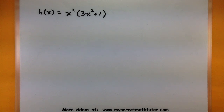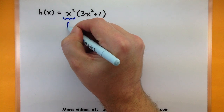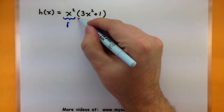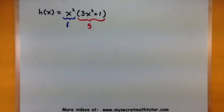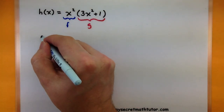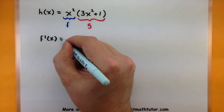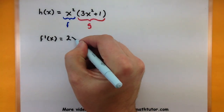In this first example, h of x equals x squared multiplied by 3x squared plus 1. To help us out, I want to go ahead and highlight what our two functions are. This part I would consider my first function — let's call that f. Then all of this is our second function — let's call that g. We want to begin by finding the derivative of each of these pieces first. So the derivative of f, using the power rule, is 2x.